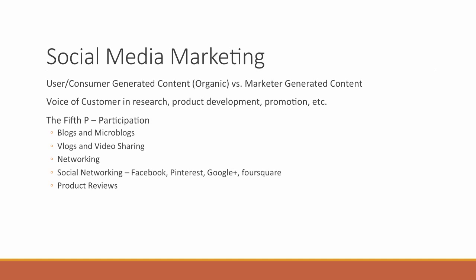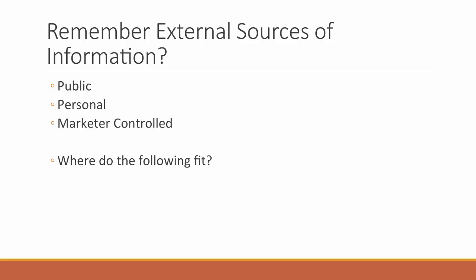Let's review something we talked about early on. We said that if a customer or potential person in your target market doesn't know about your product, they can't buy it. We reviewed the consumer decision-making process and the stage of information search, looking at three sources of external information: public, personal, or marketer-controlled. Advertising, personal selling, and sales promotion tend to be which source of external information? Probably a marketer-controlled source.